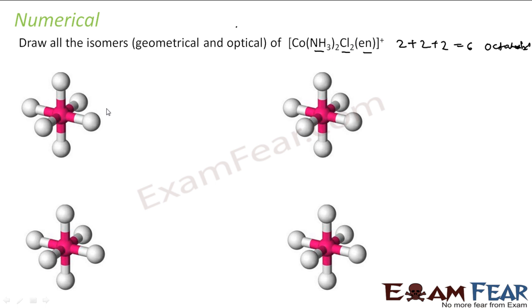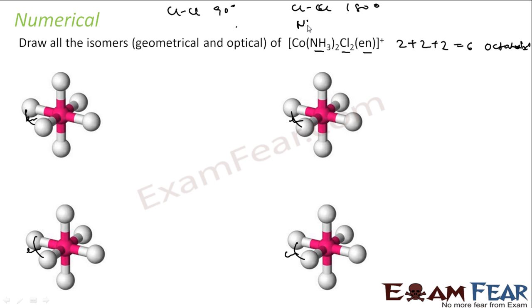EN needs to be bonded at 90 degrees only, so let's fix EN first. Now we have four remaining positions, and we have two chlorines and two NS3. We can have scenarios where chlorine-chlorine is at 90 degrees. Let's put ammonia (NS3) at 180 degrees — the only possible option to make NS3 at 180 degrees is this arrangement.